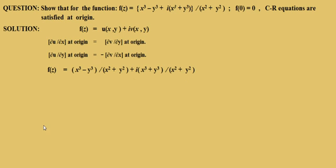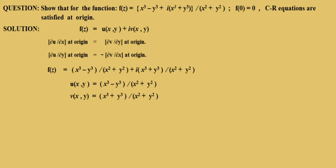Let us represent the real part as u(x,y) = (x³ − y³)/(x² + y²) and the imaginary part as v(x,y) = (x³ + y³)/(x² + y²). In this question, we have to find the partial derivatives of u and v at the origin only. So we require the values of u(x,0), v(x,0), u(0,y), v(0,y), u(0,0), and v(0,0).